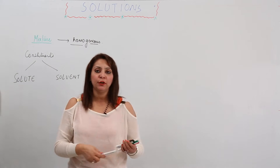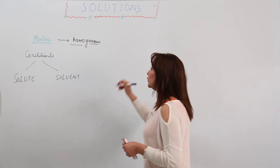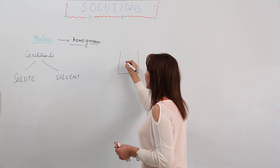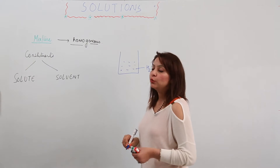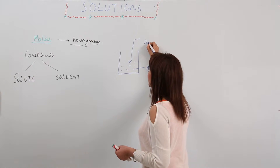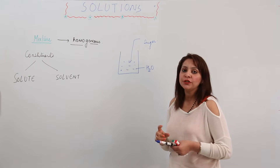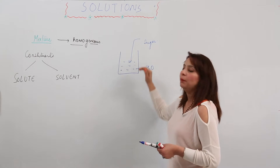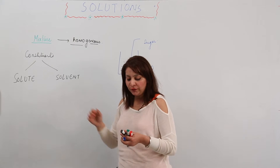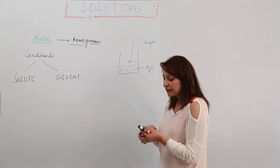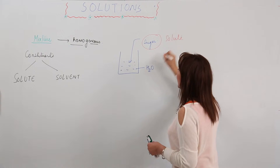Let me explain these terms with a daily-life example. Suppose you wish to drink a sugar solution. You take a glass containing water and add sugar into it. They both combine to form a sugar solution — that is, a homogeneous mixture of two components. In this example, sugar acts as the solute and water acts as the solvent.